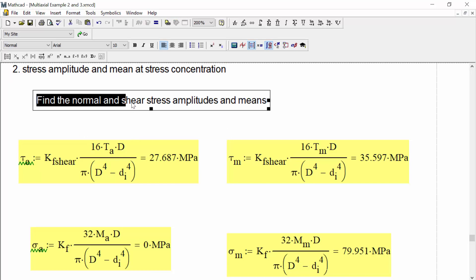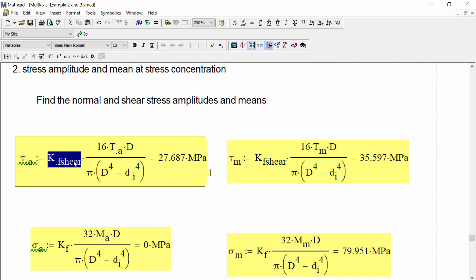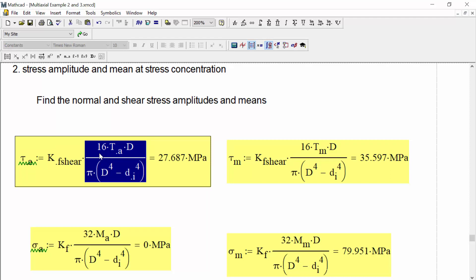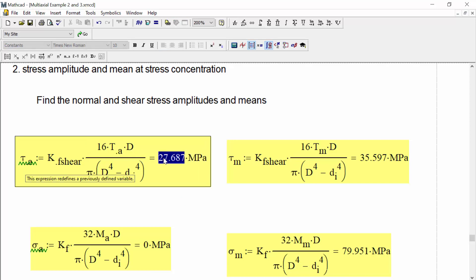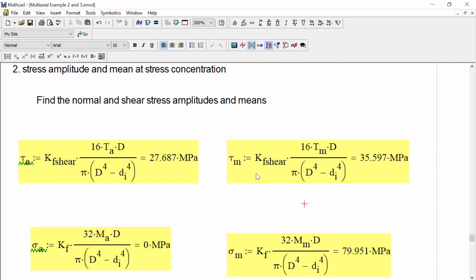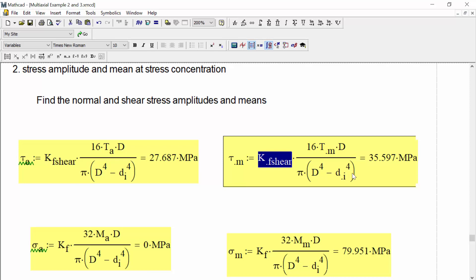So we'll go ahead and find the normal and shear stress amplitudes and mean stresses using the following equations, where the shear stress amplitude is equal to the fatigue stress concentration factor for shear Kfs times the equation for finding the shear stress. And inside of this shear stress equation, we're going to use the torque amplitude so that we can get a shear stress amplitude out. We find the shear stress amplitude is equal to 27.687 megapascals. We'll do something similar to find the mean shear stress where we have that fatigue stress concentration factor in shear, and we have the shear stress equation where we're using the mean torque so that our mean shear stress is equal to 35.597 megapascals.